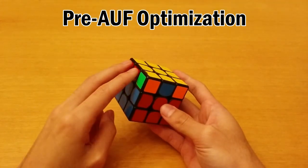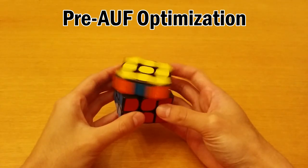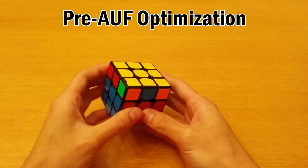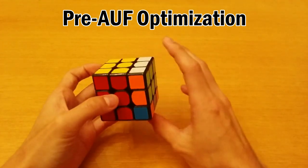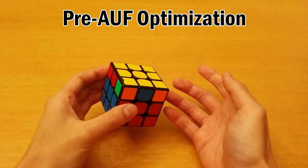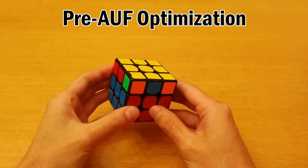And similarly if your G-perm started out over here if you do a U AUF and then start this alg it is just slightly ever so slightly slower than doing U' and then starting this alg assuming you can do both algs at the same speed. If one alg is faster than the other then of course give preference to the faster alg.